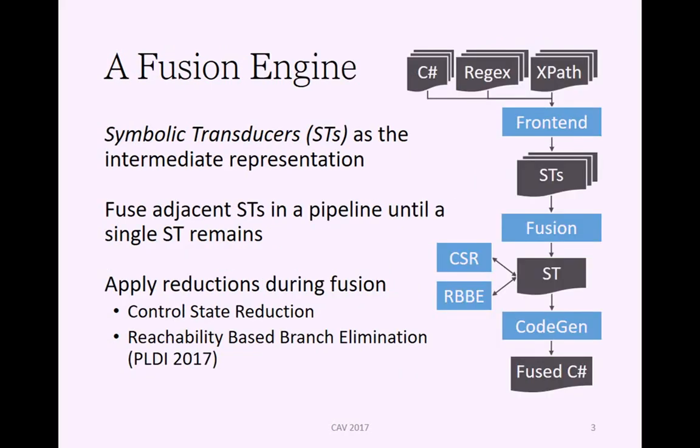We've built a tool for performing these fusions that uses symbolic transducers as its intermediate representation. The fusion process fuses adjacent symbolic transducers in a pipeline until a single one remains. During this process, it applies some reductions. There's a control state reduction method, which is what I'll be talking about now, and there's also a reachability-based branch elimination, which we presented this summer at PLDI.